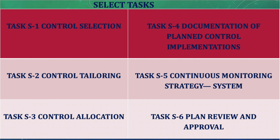Task 3, control allocation, means allocating the security controls to various system components within the system and within the organization. Task 4, documentation of planned control implementation, means documenting the controls you plan to implement inside the security and privacy plan. Remember in IT: what we did not document, we did not do. So documentation is very important.